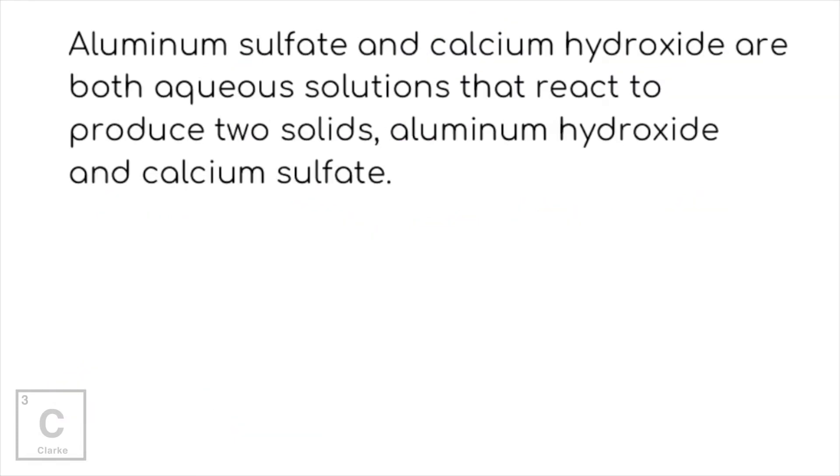Let's try another example. Aluminum sulfate and calcium hydroxide are both aqueous solutions that react, I'll pay attention to that, to produce two solids, aluminum hydroxide and calcium sulfate. So we've got calcium hydroxide, that's a reactant. And aluminum sulfate, that's a reactant. And then we have aluminum hydroxide and calcium sulfate. Those are both products. We've got to make sure we're writing these formulas correctly, though.